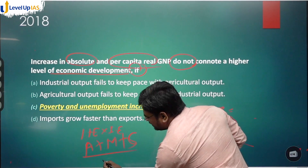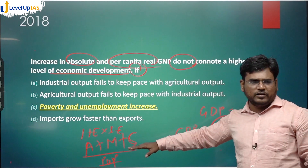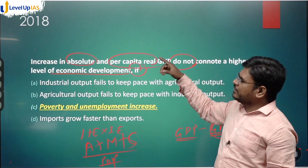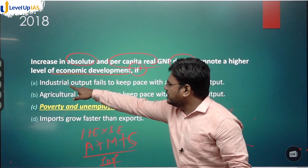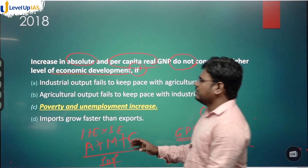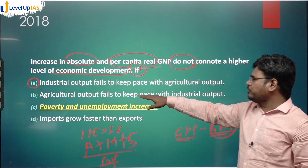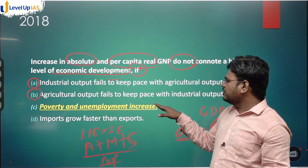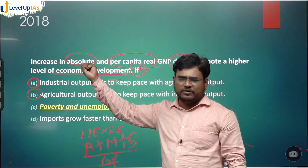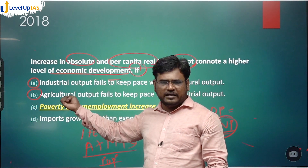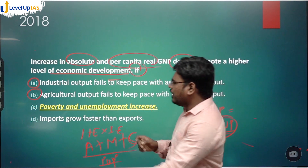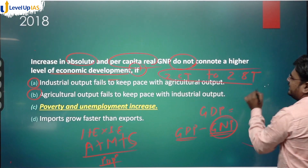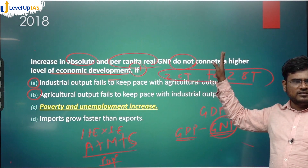Per capita GDP or GNP means dividing the total figure by population. Now, statement three says poverty and unemployment increase — can you get this information from GDP, which is just the sum of sectoral outputs? If India's GDP increases from 2.6 trillion to 2.8 trillion, is it possible to know the poverty rate from that data alone?